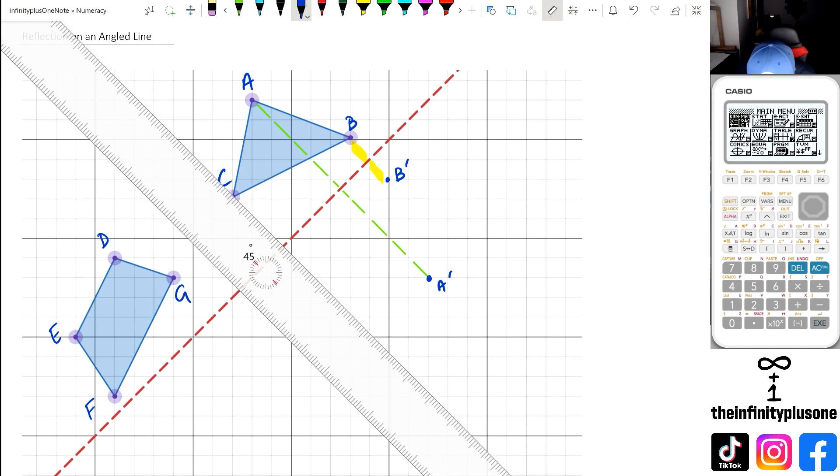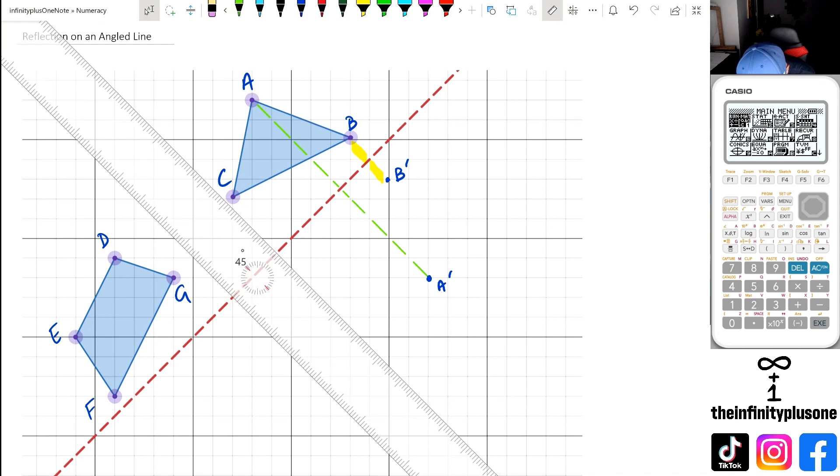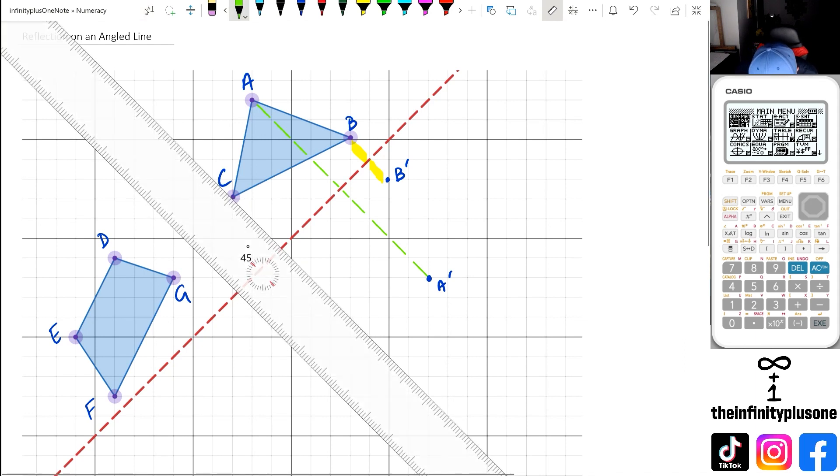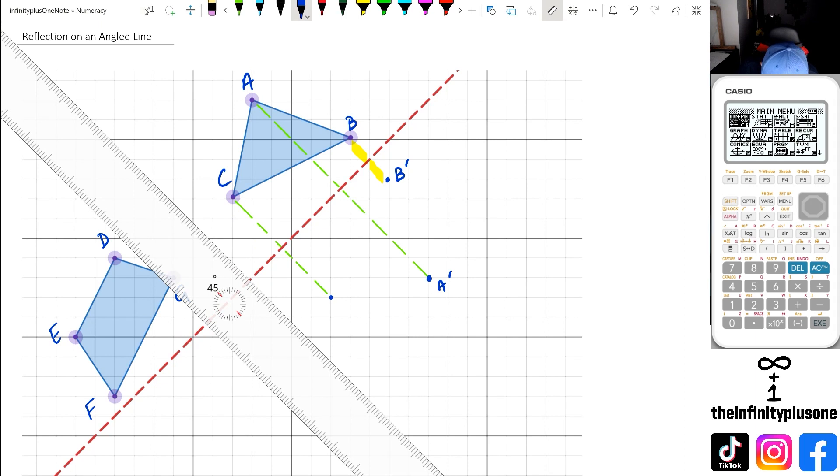And I'm going to do the same with C as well. So when I do this with C, I'm going to get one, two, two and a half. So two and a half on the other side, that's a half, one and two. So my C value is going to be here.